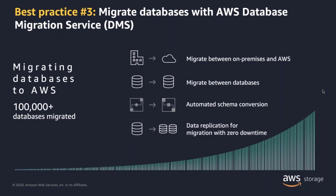Best practice number three: migrating databases using AWS Database Migration Service. This service migrates between on-premises and AWS, supports migration between different database types, and includes an automated schema conversion tool. It provides data replication for migration with zero downtime, and has been used to migrate more than 100,000 databases to AWS. If databases are the key component of your data, the AWS Database Migration Service is something worth checking out.